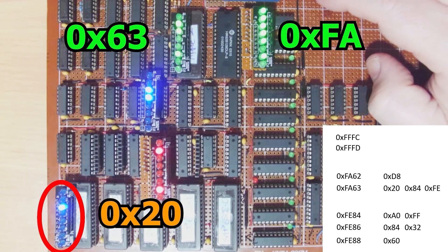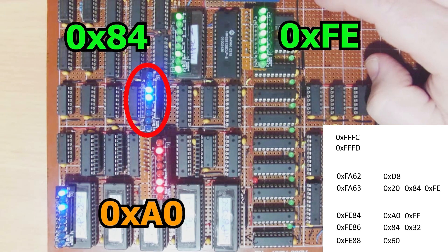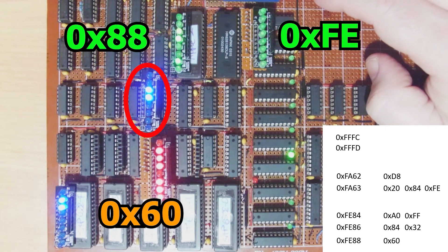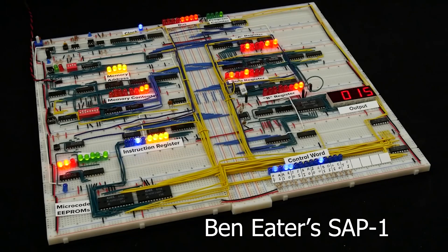If you've made it this far, then congratulations, you've made it to the end. This video is the last in a series about the SAP 6502 hardware, which is based on the SAP-1 from Albert Paul Malvino, but which was popularized by Ben Eater in his excellent YouTube series.